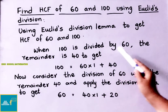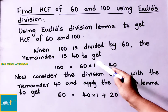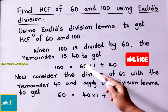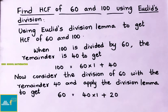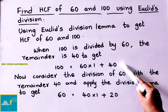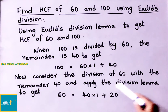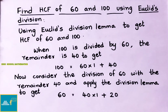When 100 is divided by 60 the remainder is 40. Now consider the division of 60 with the remainder 40 and apply the division lemma again. So on dividing 60 by 40, you get 40 once are 40, giving a remainder of 20. That is 60 minus 40 gives remainder 20.